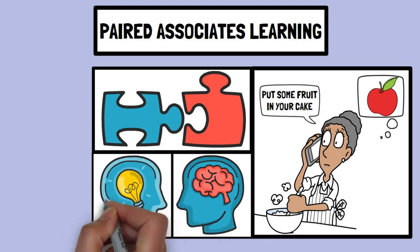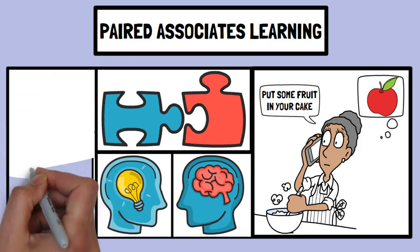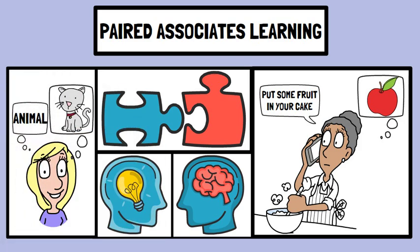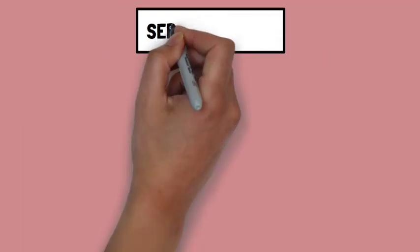Effective paired associates learning strengthens connections between words and ideas, facilitating recall when one element triggers the memory of its paired counterpart.